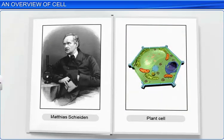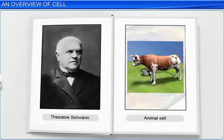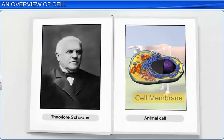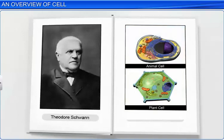A year later, Theodore Schwan, a British zoologist, examined different animal cells and discovered that the cells have a thin outer layer, which we now know as the cell or plasma membrane. He also studied plant cells and concluded that in addition to a cell membrane, plant cells also have a cell wall, a characteristic unique to plants.